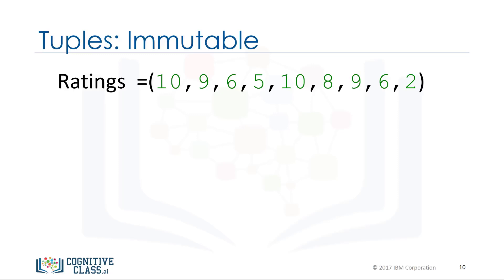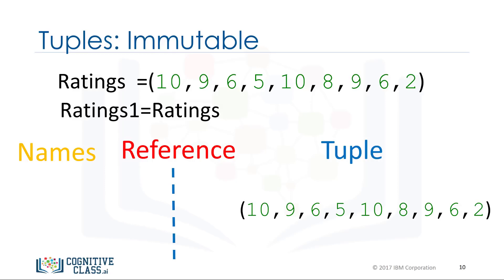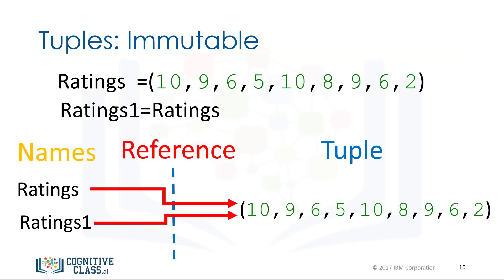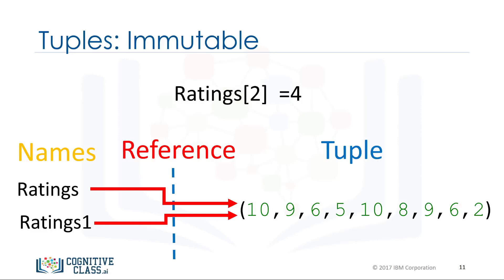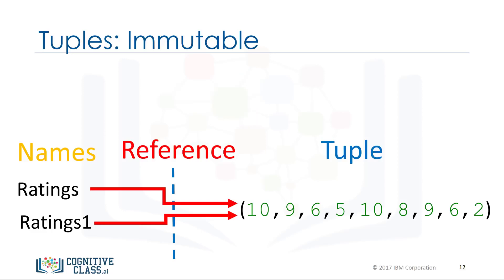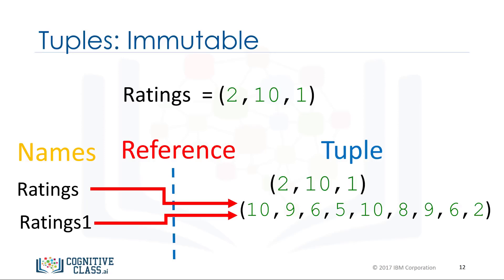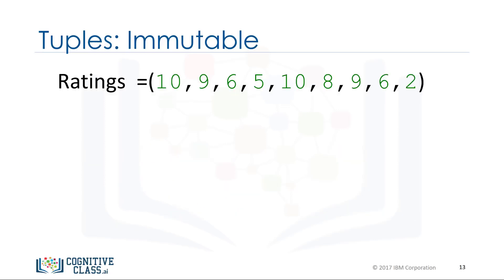Tuples are immutable, which means we can't change them. Each variable does not contain a tuple, but references the same immutable tuple object. Because tuples are immutable, we can't change elements. Therefore, ratings one will not be affected by a change in rating. We can assign a different tuple to the ratings variable. As a consequence of immutability, if we would like to manipulate a tuple, we must create a new tuple instead.